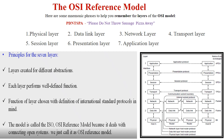OSI reference model — what does OSI mean? It stands for Open System Interconnection. This OSI reference model is used to transfer data from one computer to another computer. When you are transferring data through a network, how this model helps to transfer the data — that is what we are going to study here.